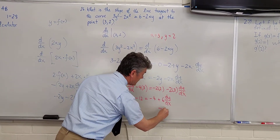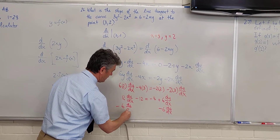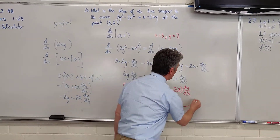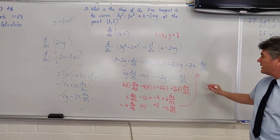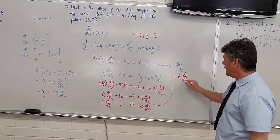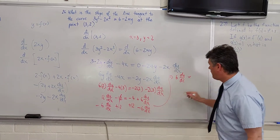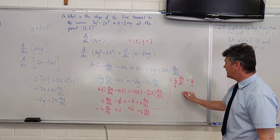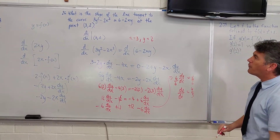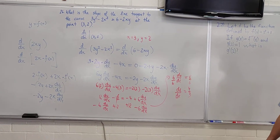You can subtract 6 dy/dx from both sides and add 12 to both sides. This is just an algebraic problem — the variable just looks scary. 12 dy/dx minus 6 dy/dx is 6 dy/dx. 6 dy/dx equals negative 4 plus 12, which is 8. Dividing both sides by 6, dy/dx equals 4/3. So the slope of the tangent line is 4/3. That's all there is to question number 26.